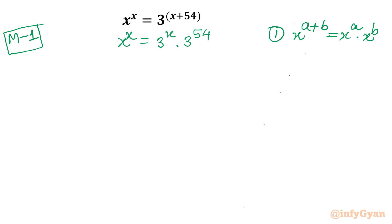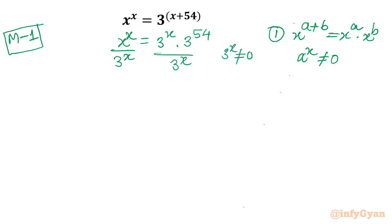Now, since a^x cannot equal zero, 3^x is not zero, so I can divide both sides by 3^x. Once I divide, that term cancels out.